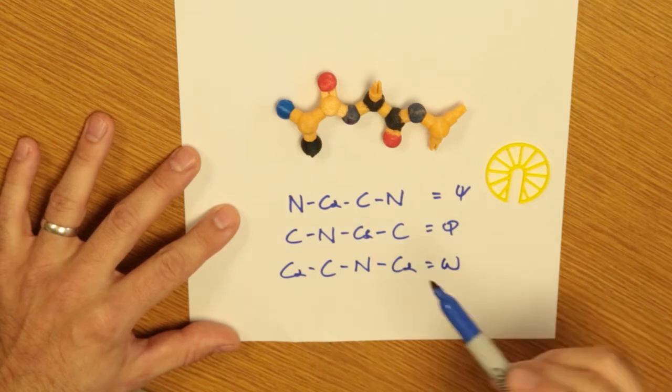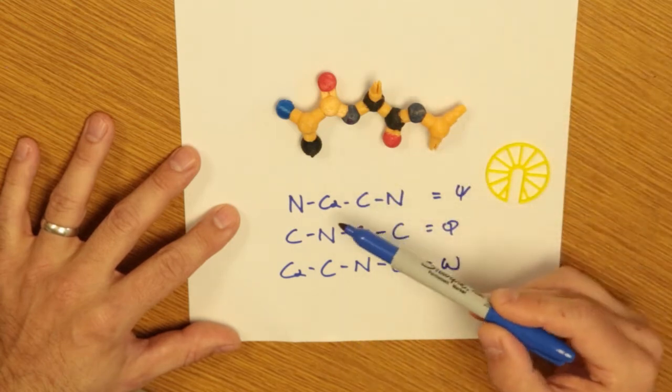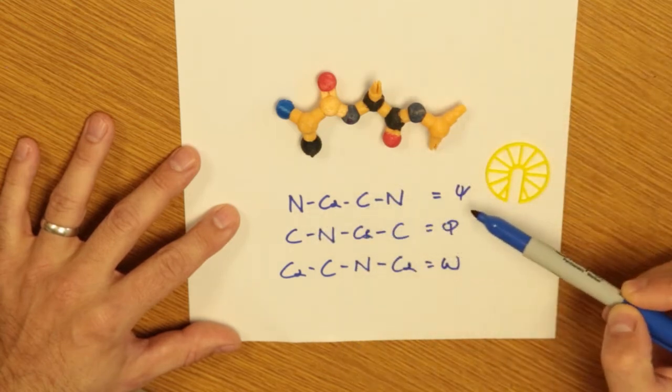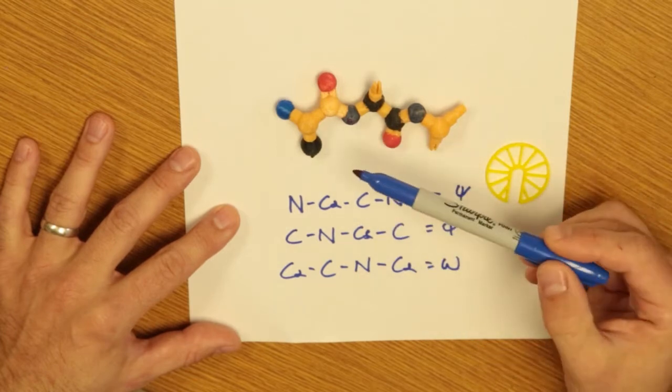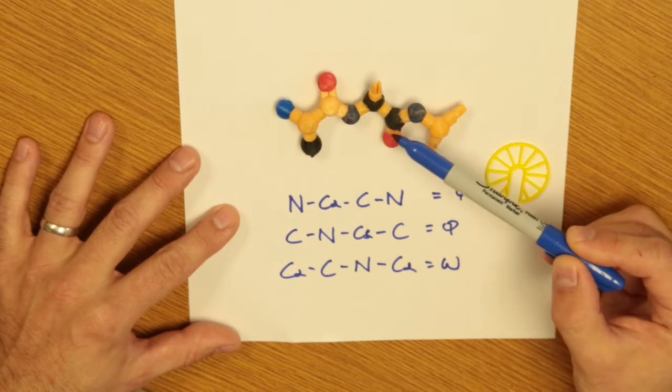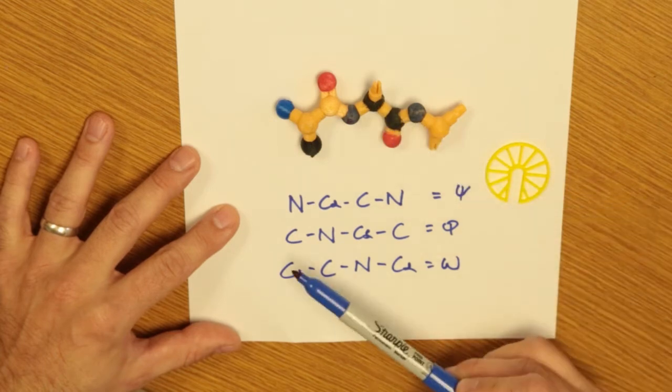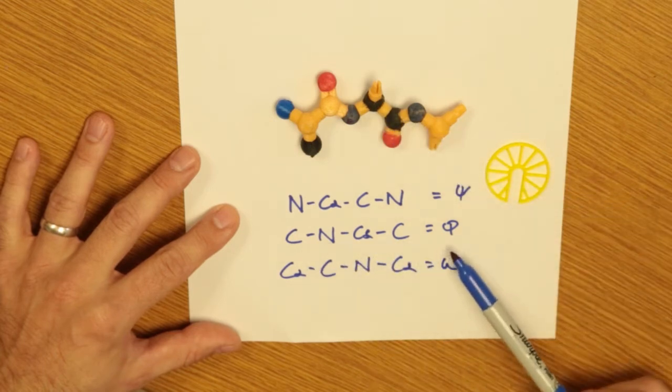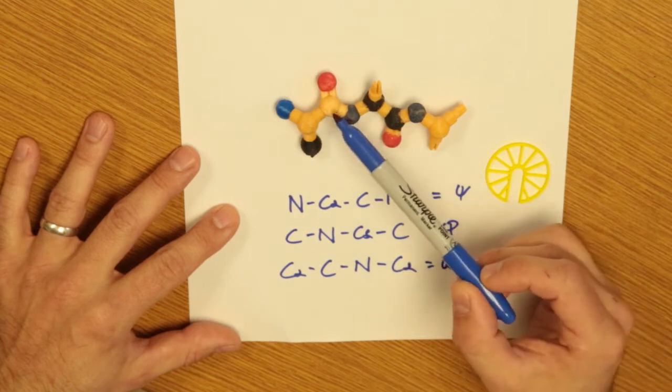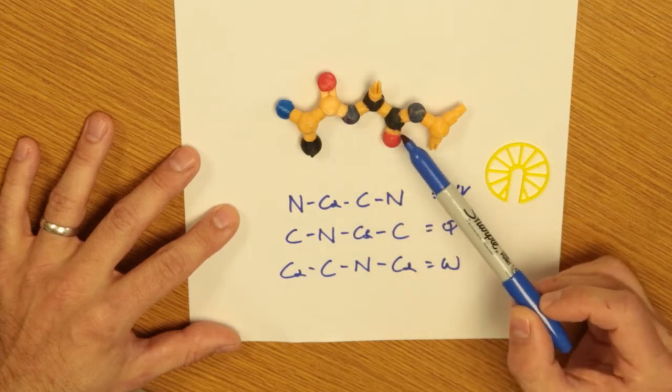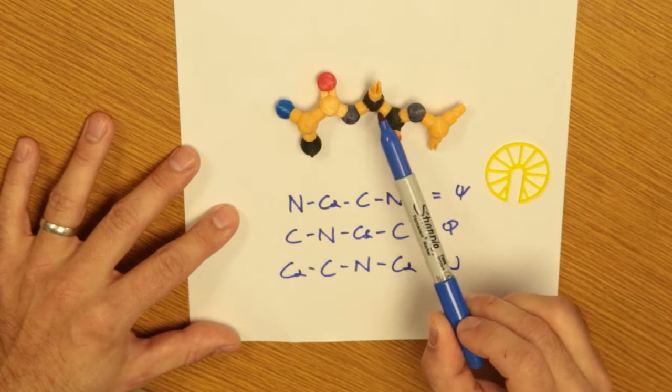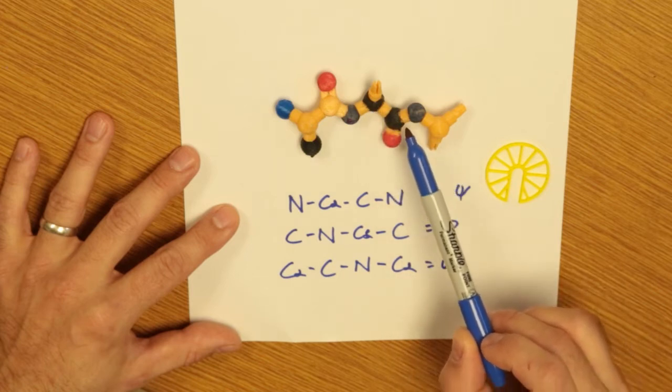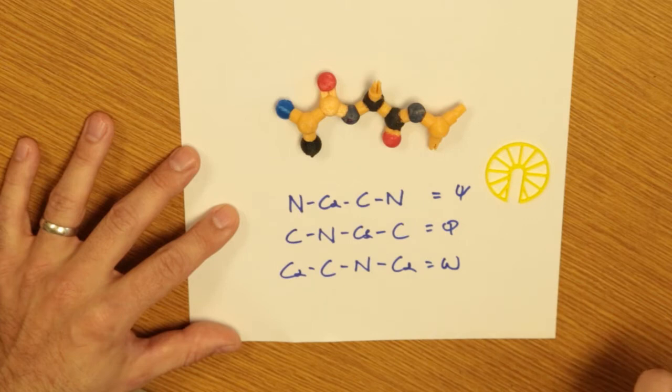In the peptide backbone we have repeating four different atoms. If we have NCαCN, this is a psi torsion angle, and I'm using the painted model here so these are easier to identify. If we have CNCαC, this is the phi torsion angle. And we also have, if we have CαCNCα, this would be the omega torsion angle right here.